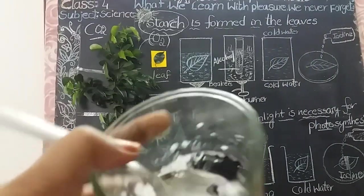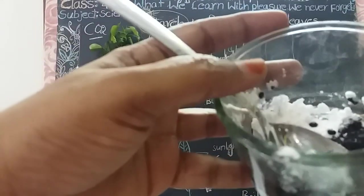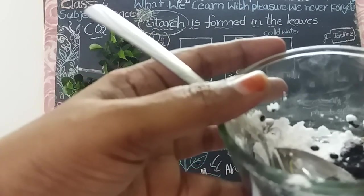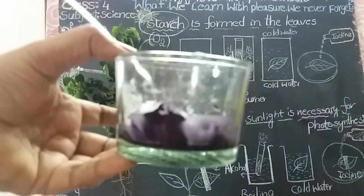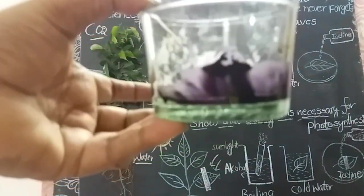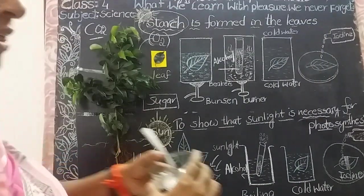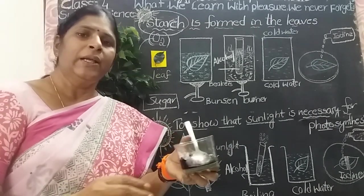This is the white corn flour. You can take corn flour, wheat flour, bread, potato, or boiled rice and add a few drops of iodine solution. Immediately, the substance turns into bluish black. From this we can say that starch is present in that food item. Starch is formed during the process of photosynthesis.